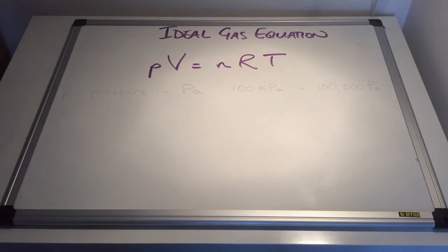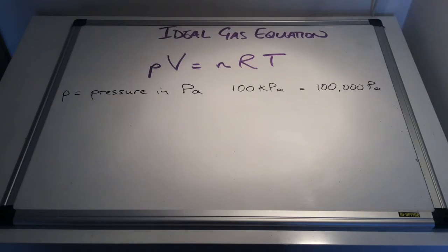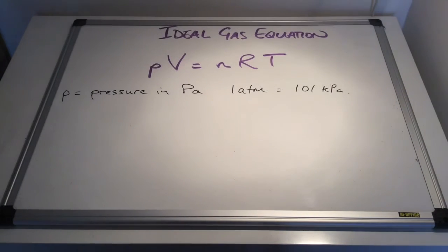So the P term stands for pressure, but in the ideal gas equation pressure must be in pascals. Typically they'll give you a pressure in kilopascals. So there's an example on the board: 100 kilopascals is 100,000 pascals. It's also worth making the point that one atmosphere in pressure is 101 kilopascals.